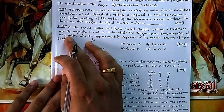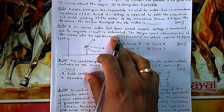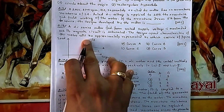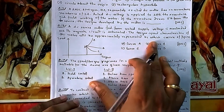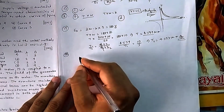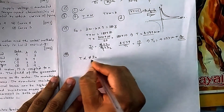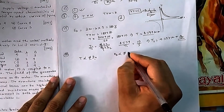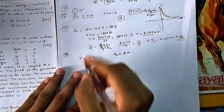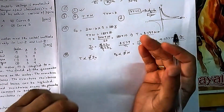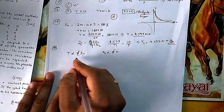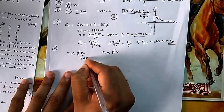For question 18: a DC series motor fed from rated supply voltage is overloaded and its magnetic circuit is saturated. This means phi is saturated — phi cannot be increased further, so it becomes constant. The torque-speed characteristics of this motor will be approximately represented by which curve? In a DC series motor, torque equals phi times Ia. Since phi is now constant, torque is directly proportional to Ia, and back-EMF Eb is directly proportional to speed N.